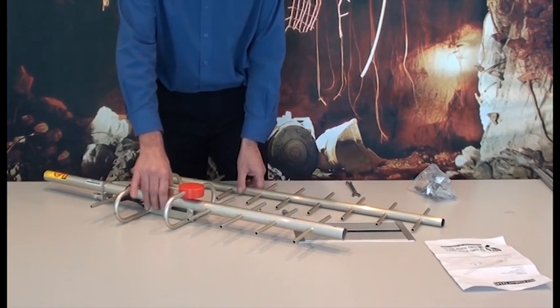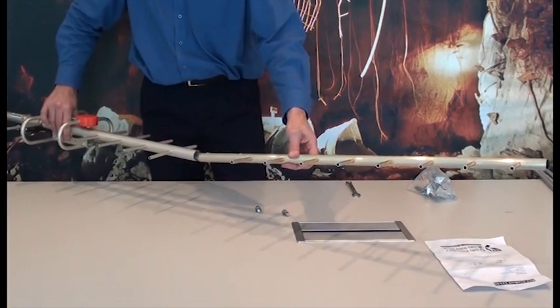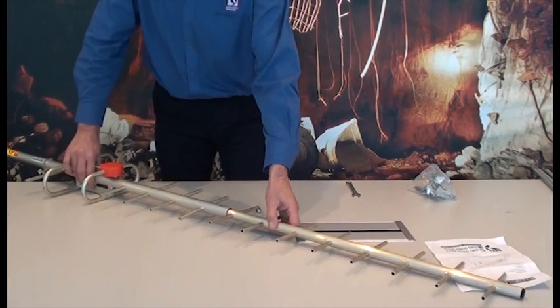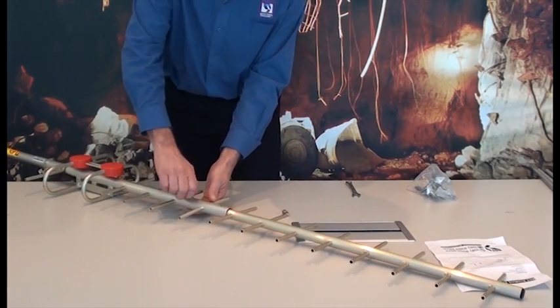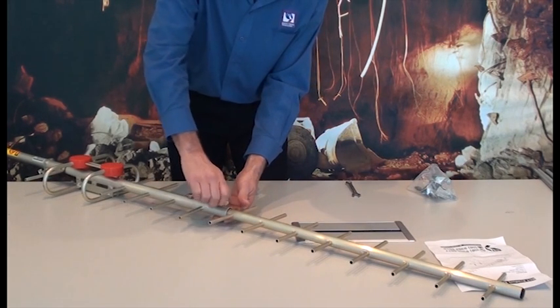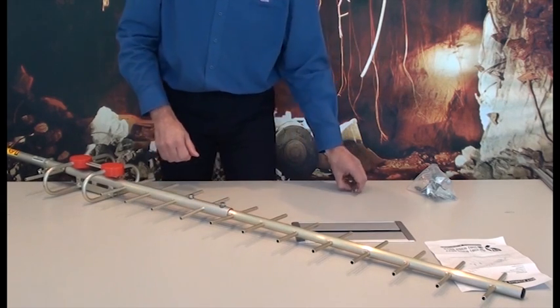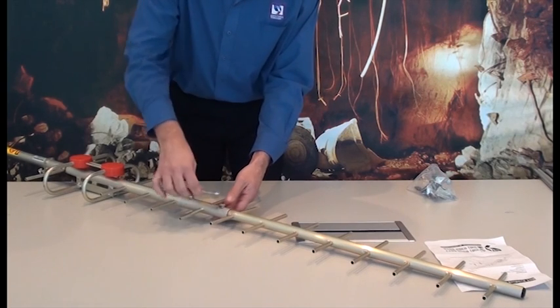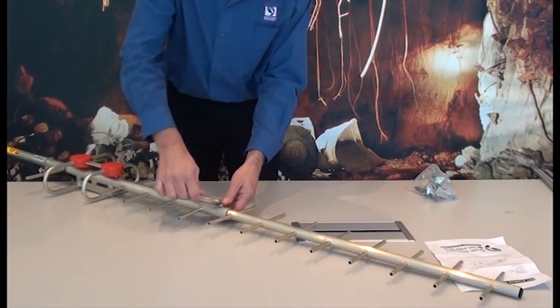The Yagi comes in two pieces for simplicity and low cost on freight. The Yagi goes together as such with the holes lined up, and then you place both the M8 bolts into the holes. Screw them up hand tight initially, and then tighten with a 13mm spanner. Do not over tighten, we don't want to crush the antenna.